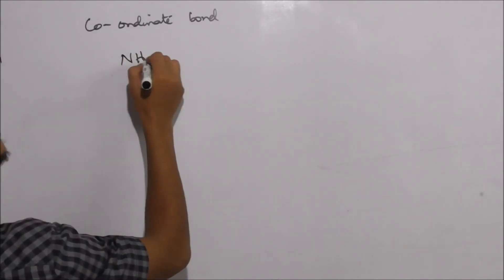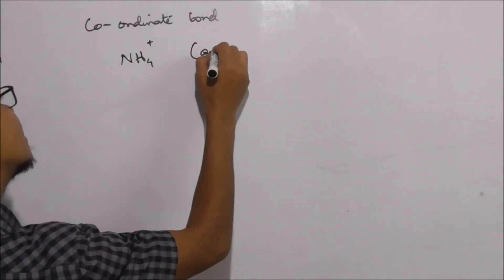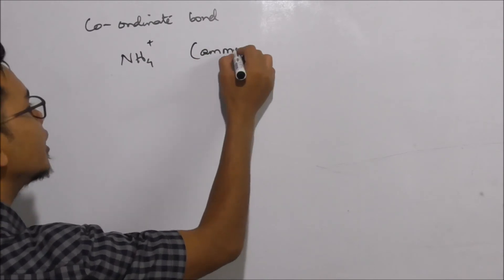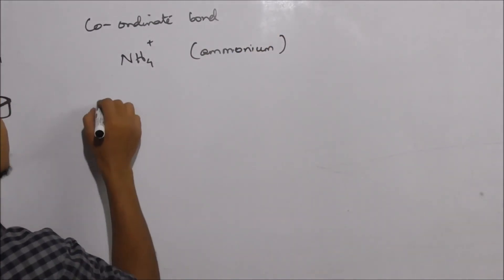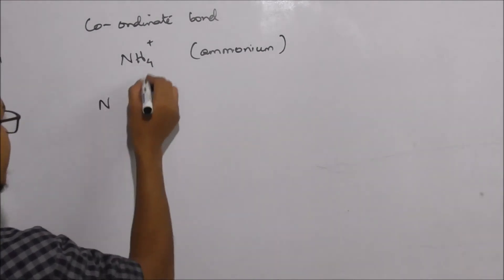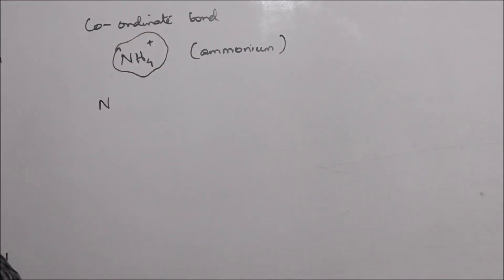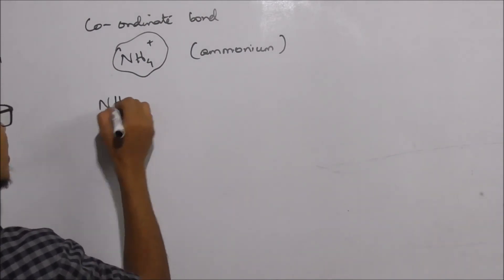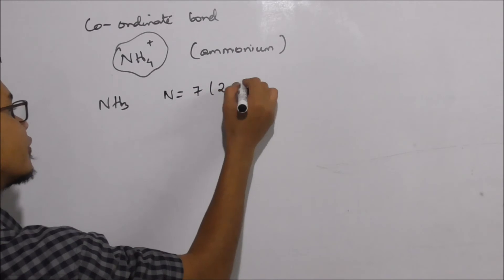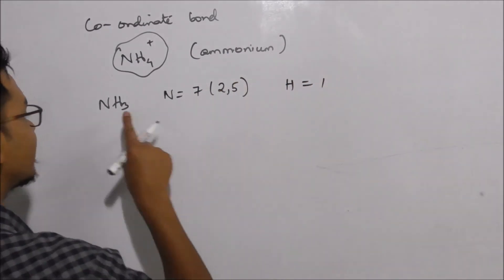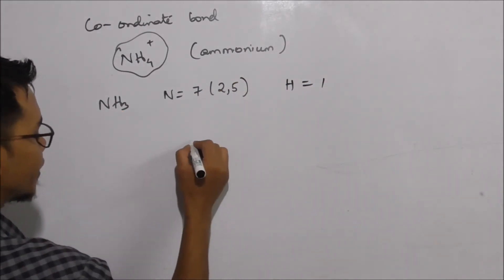This is the formation of the ammonium ion. Nitrogen has atomic number 7, with configuration 2 and 5. Hydrogen has atomic number 1. The formation of the ammonium molecule involves nitrogen bonding with hydrogen atoms.